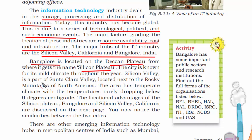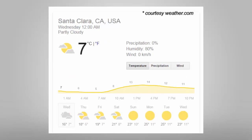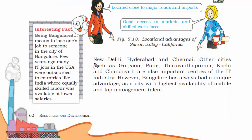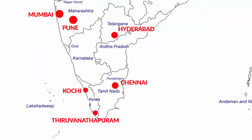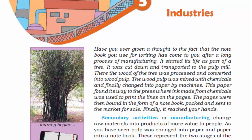The major hubs of IT industry are Silicon Valley, California, and Bangalore in India. Bangalore is located on the Deccan Plateau, earning the name Silicon Plateau. Silicon Valley is part of Santa Clara Valley next to the Rocky Mountains of North America. Both have ideal climates: Bangalore has an awesome climate — neither too warm nor too cold despite being in the tropical region; Silicon Valley is in a temperate zone with similar moderate climate. In India, other IT hubs include Mumbai, New Delhi, Hyderabad, Chennai, Gurgaon, Pune, Thiruvananthapuram, Kochi, and Chandigarh. Bangalore has the highest availability of middle and top management talent.